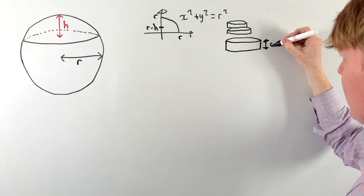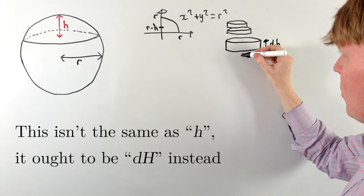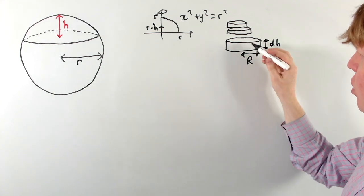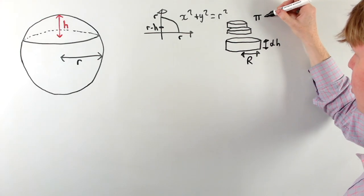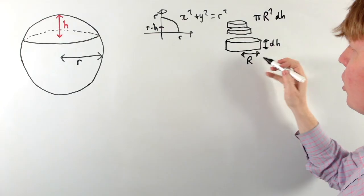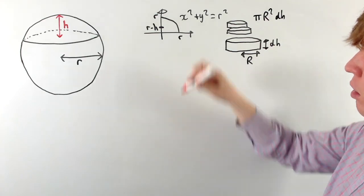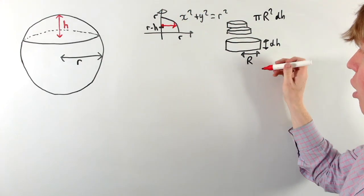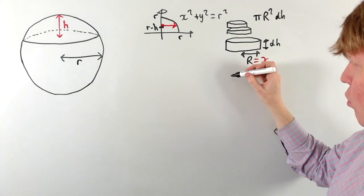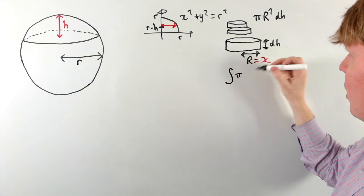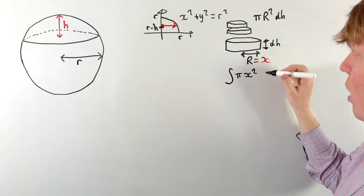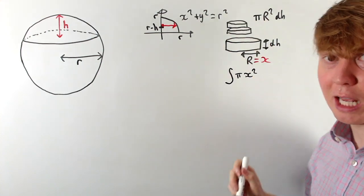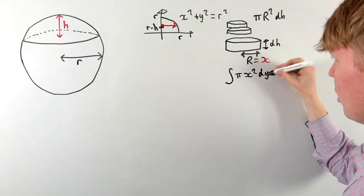For one small cylinder, its height is dy and its radius we call capital R, so we don't confuse it with the radius of the sphere. The volume of the cylinder is π R² dy. Capital R, the radius of our cylinder, is just the x-coordinate at that point, so R = x. The integral becomes the integral of π x² dy, where dy is the infinitesimal vertical change.